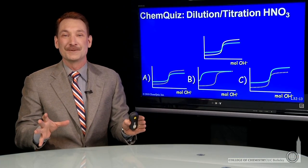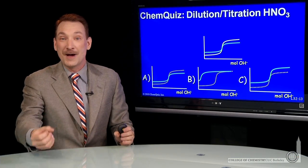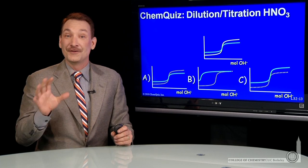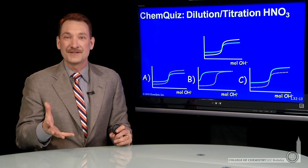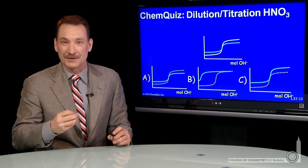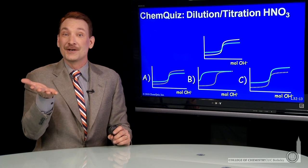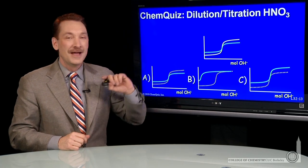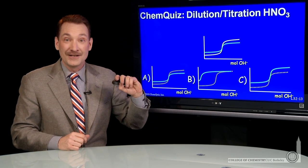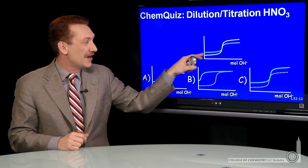We're looking at two titrations, one where we've diluted by a factor of 10. If you dilute a strong acid solution by a factor of 10, you change the H3O+ concentration by a factor of 10, and you increase the pH by one unit. So the initial pH should be one unit higher than the undiluted.